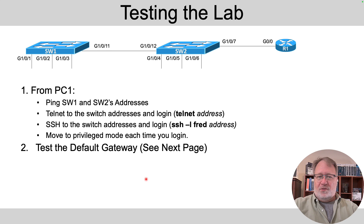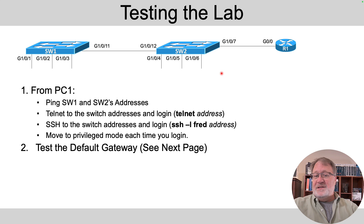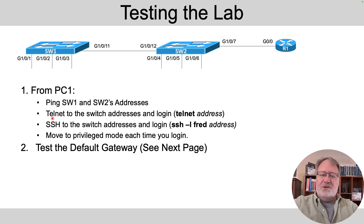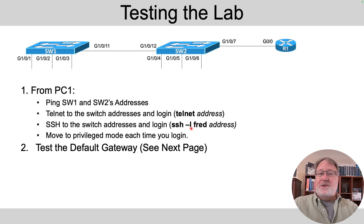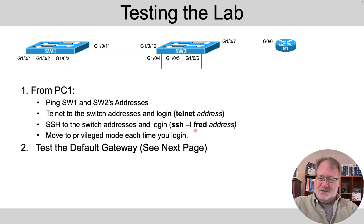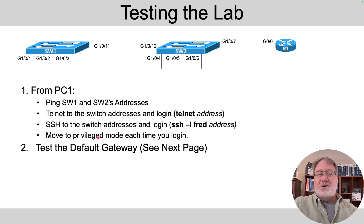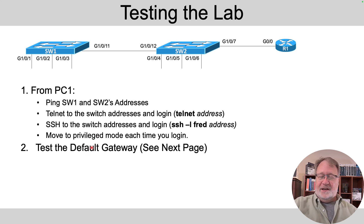Let's talk about testing for a moment. There are six PCs, three on each switch, so you can go to those PCs like PC1 and ping the switch IP addresses — those should work if you've configured them correctly. You can use the telnet command from those PCs, or the SSH command. The switches are pre-configured with a username of Fred and a password of Barney, so SSH minus L Fred followed by the address would let you log in with SSH to the switch. Move to privilege mode each time and test the enable mode password. You can also test the default gateway setting.